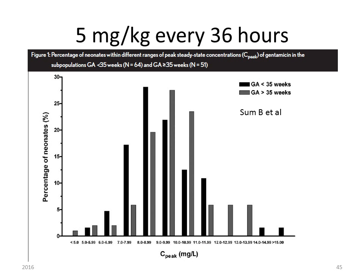In this graph you see the peak level values when giving 5 mg per kilogram body weight every 36 hours. The black bars represent premature neonates, whose peak level distribution is shifted slightly to the left — resulting in somewhat lower values — compared to the grey bars representing mature neonates, who have a slightly higher peak level. This reflects the higher volume of distribution in premature versus mature neonates.